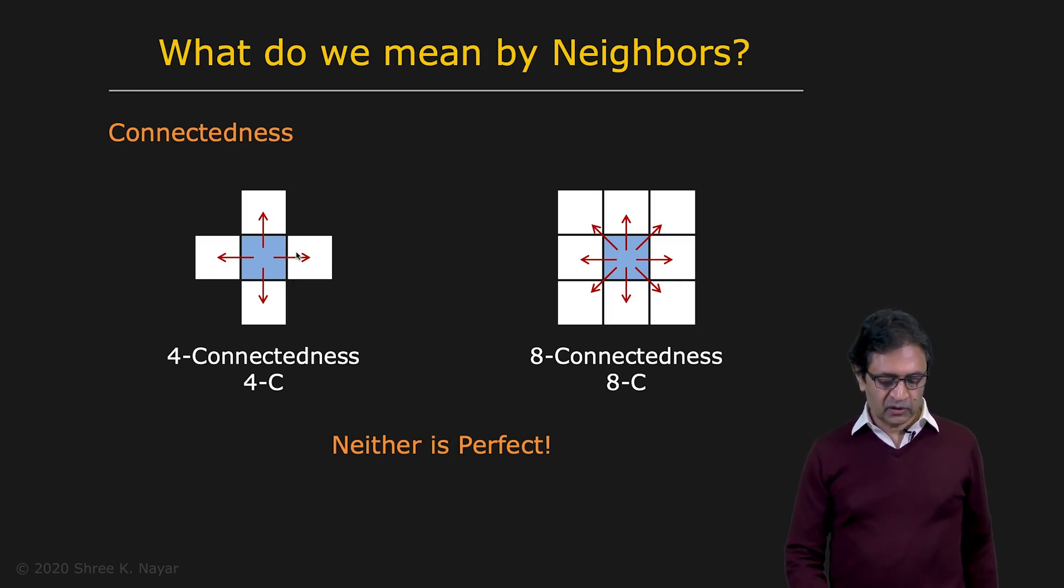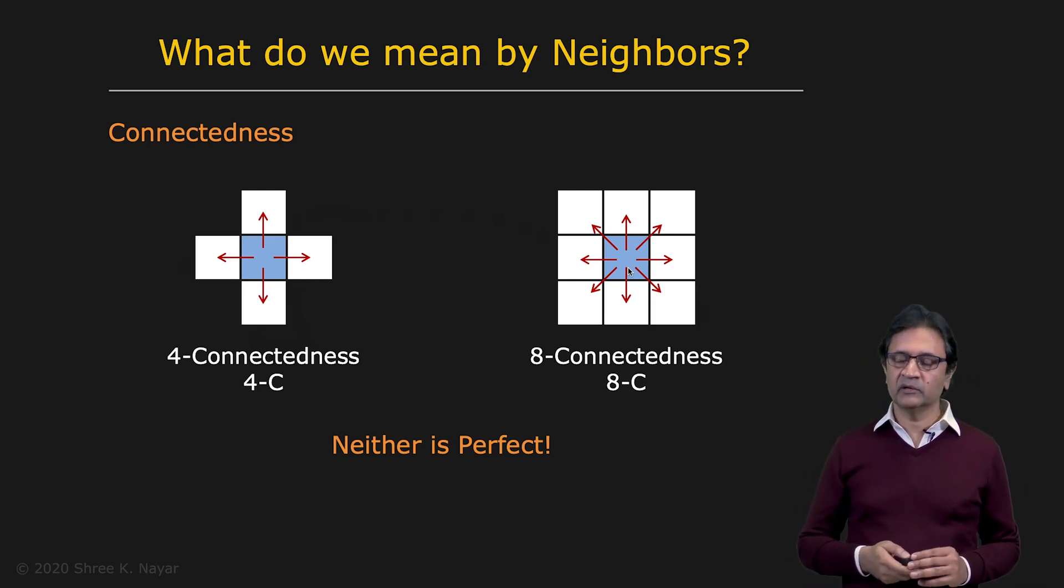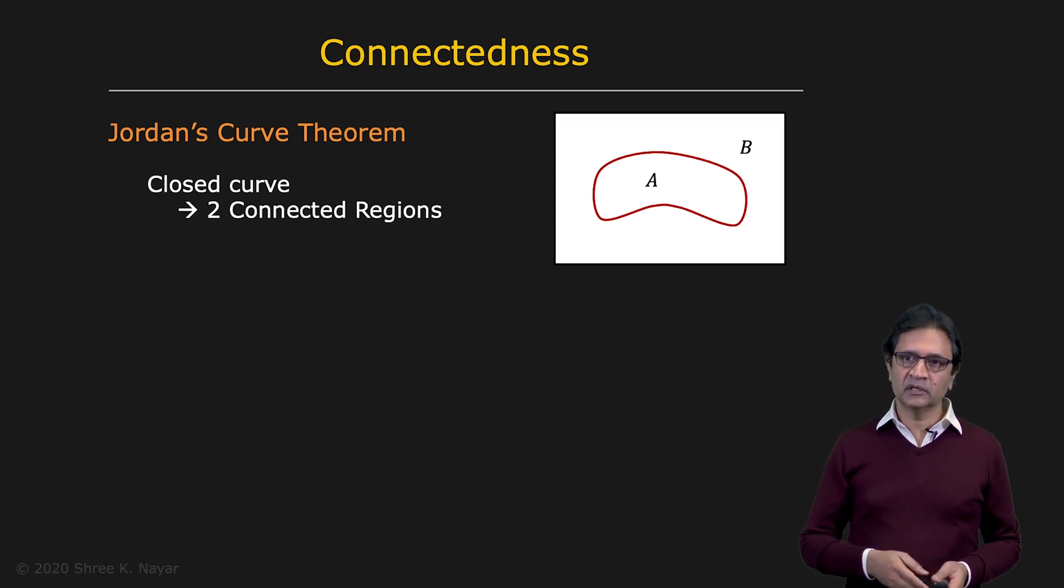We're talking about neighbors here. Well, it's not that obvious. There are two definitions possible. One is called four connectedness. So you have a pixel here. And we'll assume that that pixel is connected. Its neighbors are this one, this one, this one, and this one. That's four connectedness. But you can have a different definition, which is eight connectedness, where you include the diagonal pixels. You have eight pixels right here, which are neighbors.